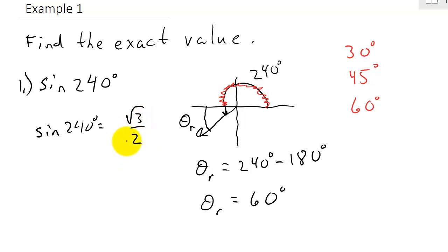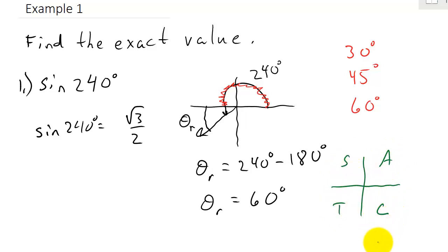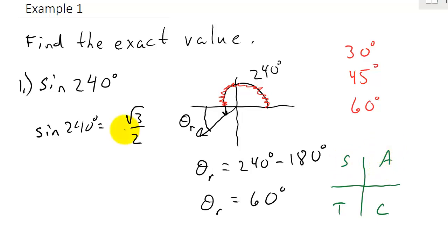Now this is not our final answer. Remember 'all students take calculus' — all trig functions are positive in the first quadrant, sine and cosecant are positive in the second quadrant, only tangent and cotangent are positive in the third quadrant, and only cosine and secant are positive in the fourth quadrant. We're in the third quadrant, so sine is negative. This would be negative square root of 3 over 2, and that's your answer.